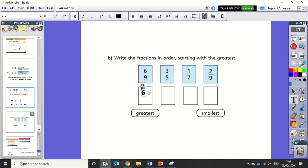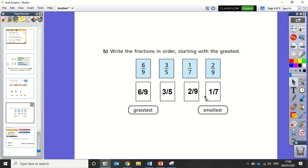Six ninths is bigger than three fifths. And three fifths is going to go there. Now I just need to do which is bigger, one seventh or two ninths. I could find the common multiple, which is 63. But I'm just going to tell you it's two ninths and one seventh. So that is your answer to 6B.